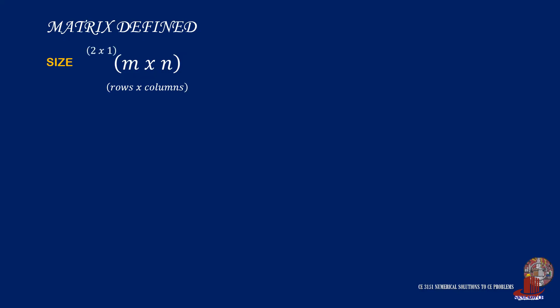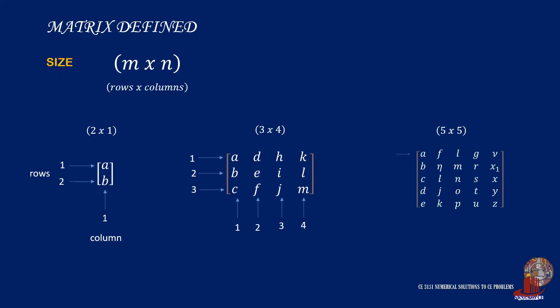For instance, a 2 by 1 matrix would have 2 rows and a column. Another is a 3 by 4 matrix which would be expected to have 3 rows and 4 columns. And another is a 5 by 5 matrix which would contain 5 rows and 5 columns thereby having 25 elements.